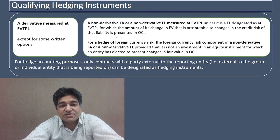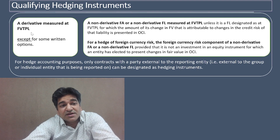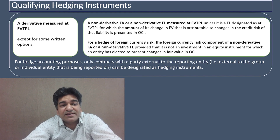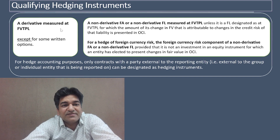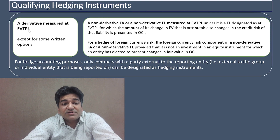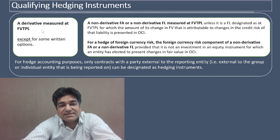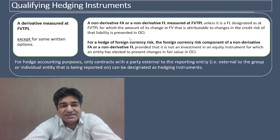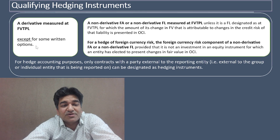Now let us discuss what are qualifying hedging instruments. Ind AS 109 has given a list of qualifying hedging instruments. First: a derivative measured at fair value through profit and loss. We have already covered derivatives in earlier videos — forward contracts, futures contracts, options, and swap contracts — and how financial assets and liabilities are classified. For the purpose of this session, a derivative measured at fair value through P&L can be a qualifying hedging instrument. Ind AS 109 states one exception: some written options cannot be qualifying hedging instruments.